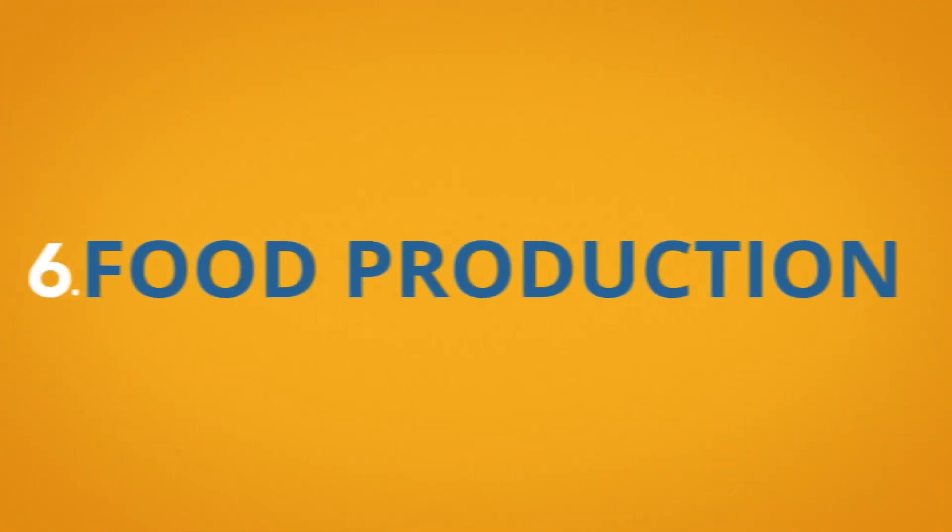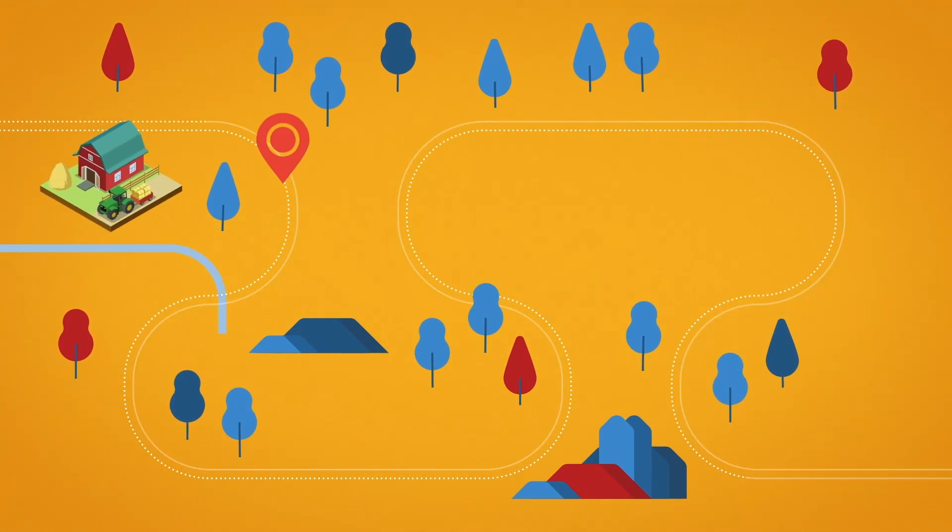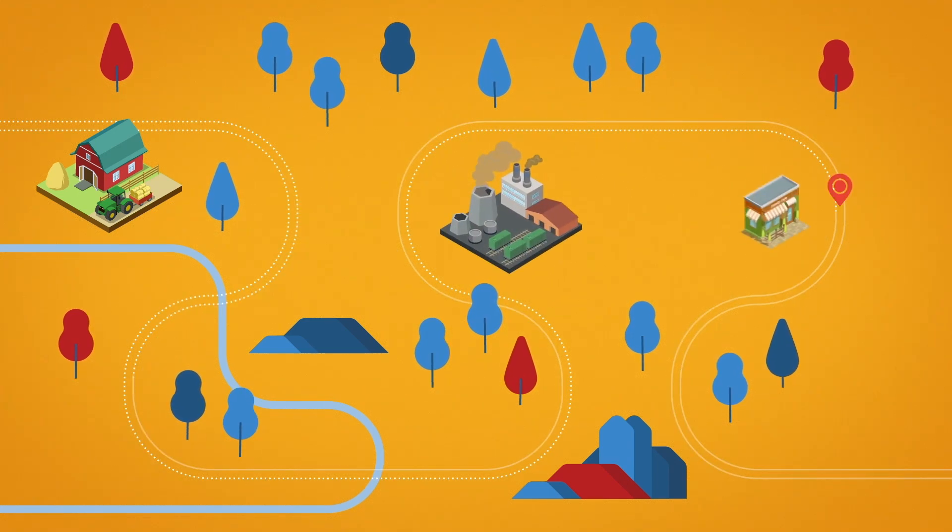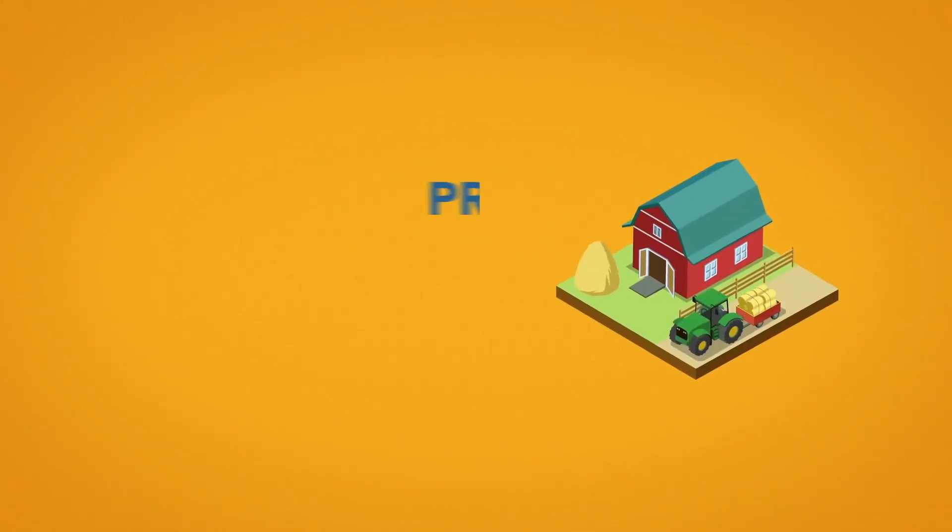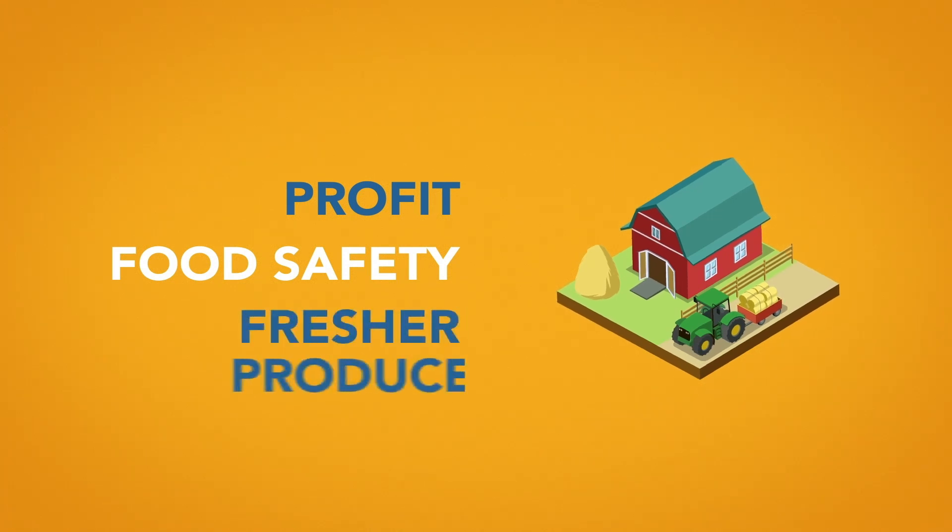Next up is food production. Blockchain technology can also be used to simplify the way we produce food, tracking goods from farm to fork. Efficiency in the supply chain would mean more profit for companies, improved food safety and fresher produce.